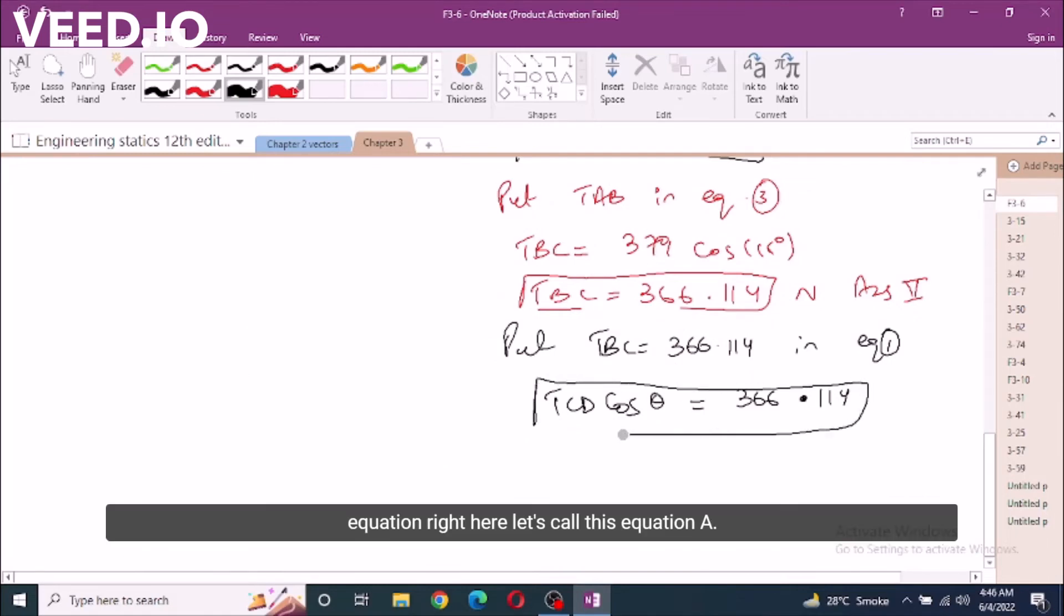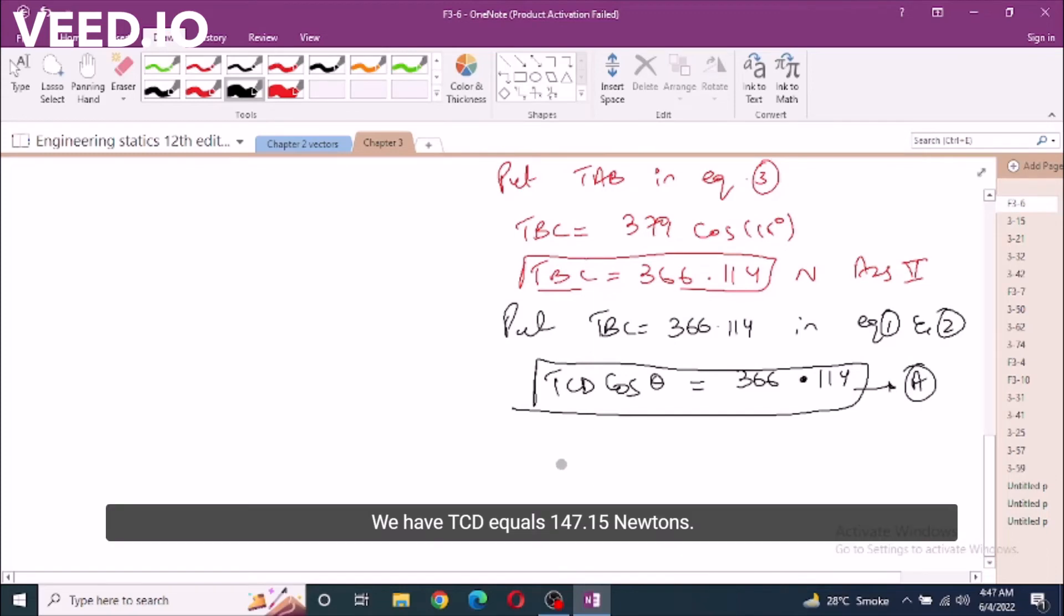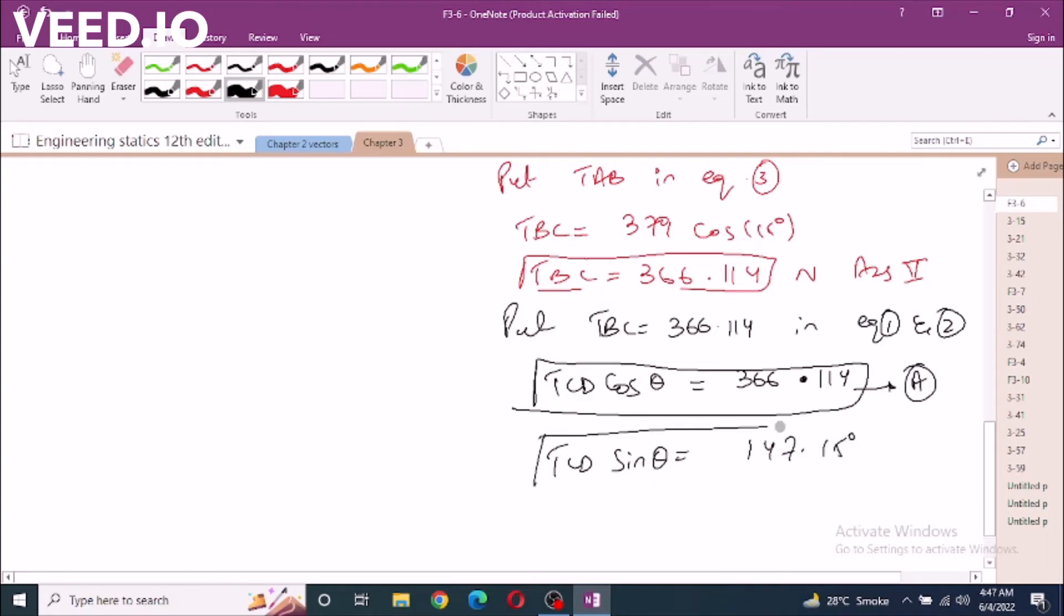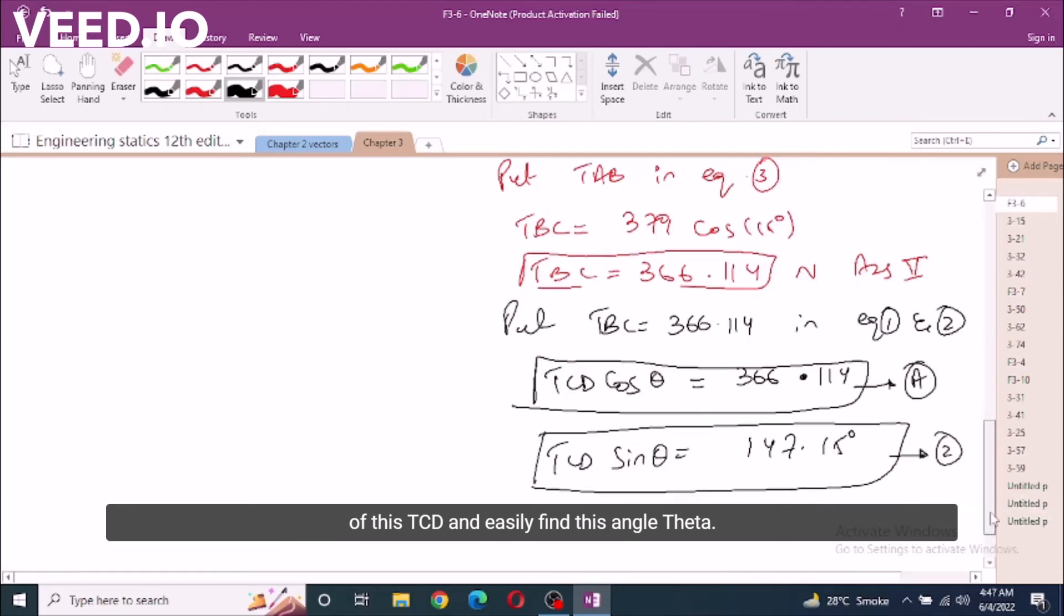We have another equation right here, let's call this equation A. So we have TCD sin theta equals 147.15, this is our second equation. Now I am seeing sin theta and cos theta. If I divide these two equations, I can get rid of this TCD and can easily find this angle theta.